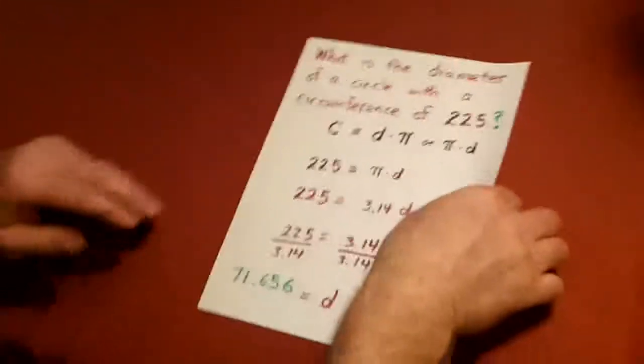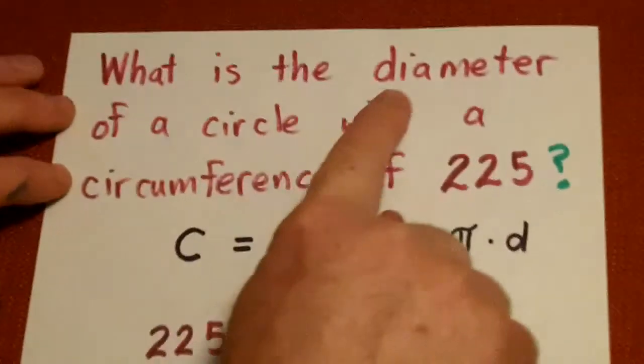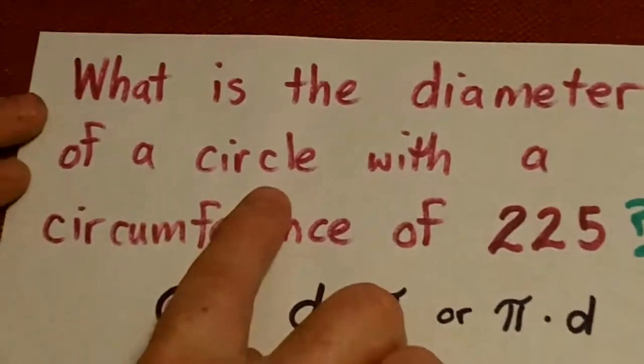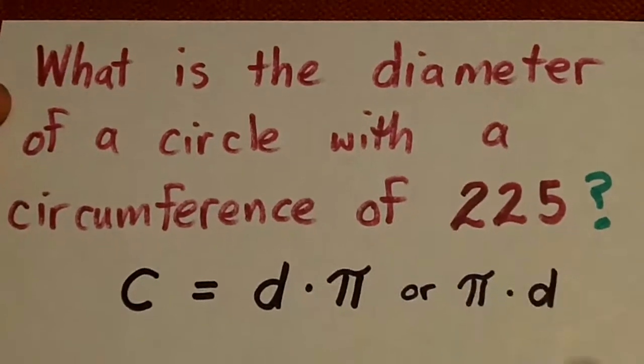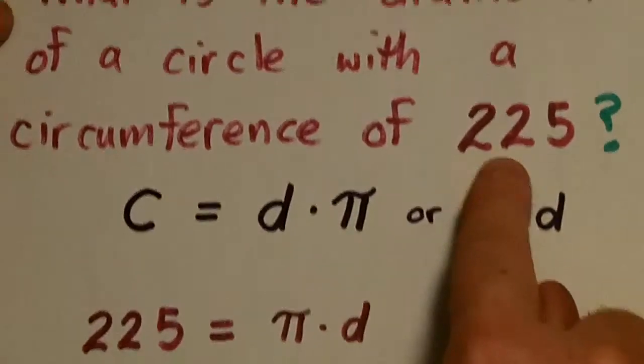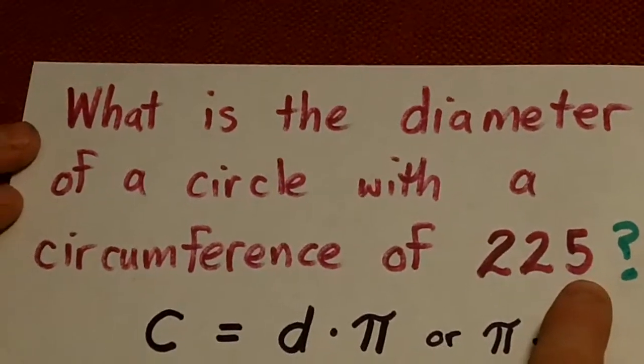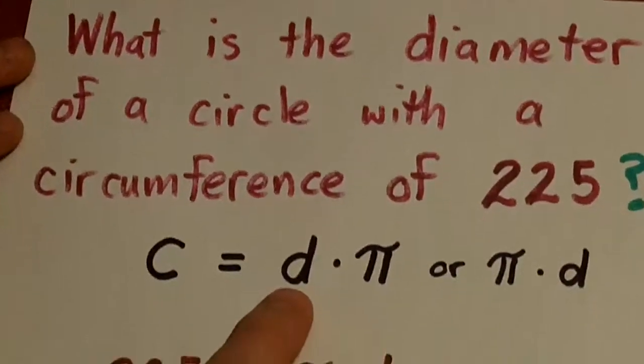Second problem. Uh-oh. What is the diameter of a circle with a circumference of 225? So now we know the circumference is 225, but we don't know the diameter.